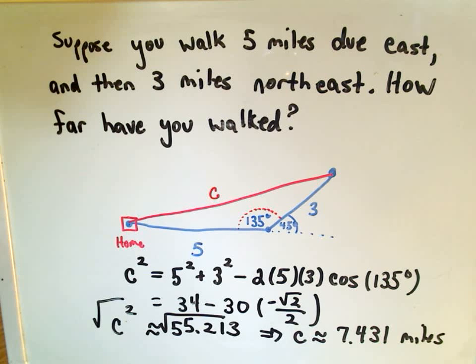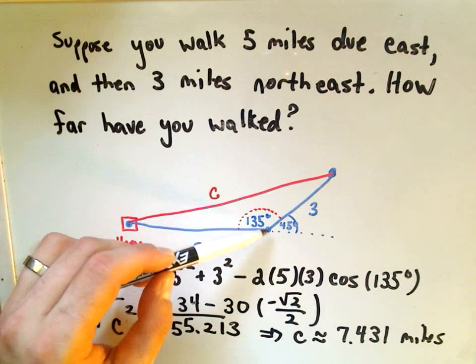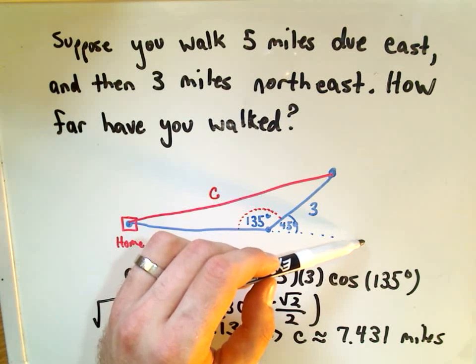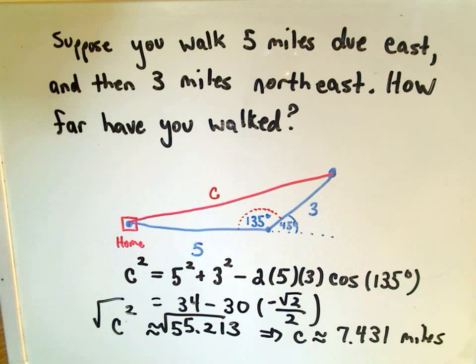Certainly that seems like a reasonable answer. I mean, if I had gone 5 miles east and then another 3 miles directly east, that would have been 8 miles away. But I think I'm going to be a little bit closer because I started walking in this northeast direction. Nothing too crazy, just one more random formula that you've got to commit to memory.